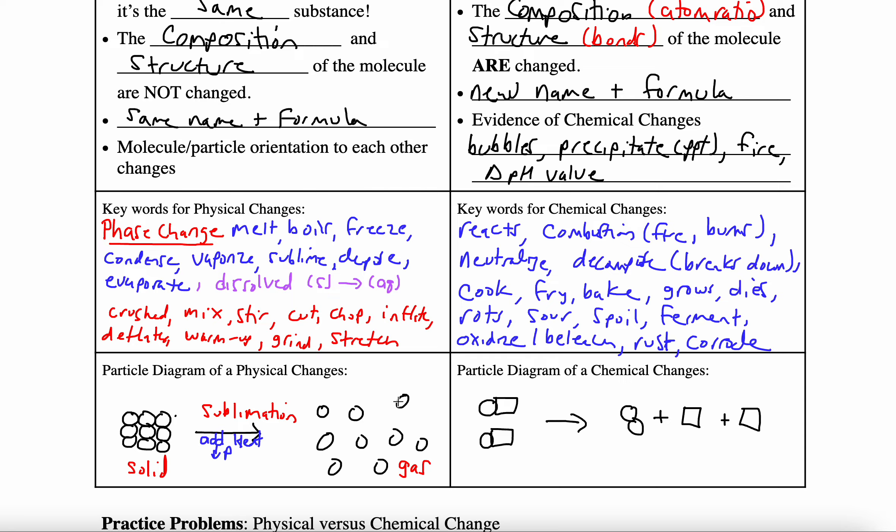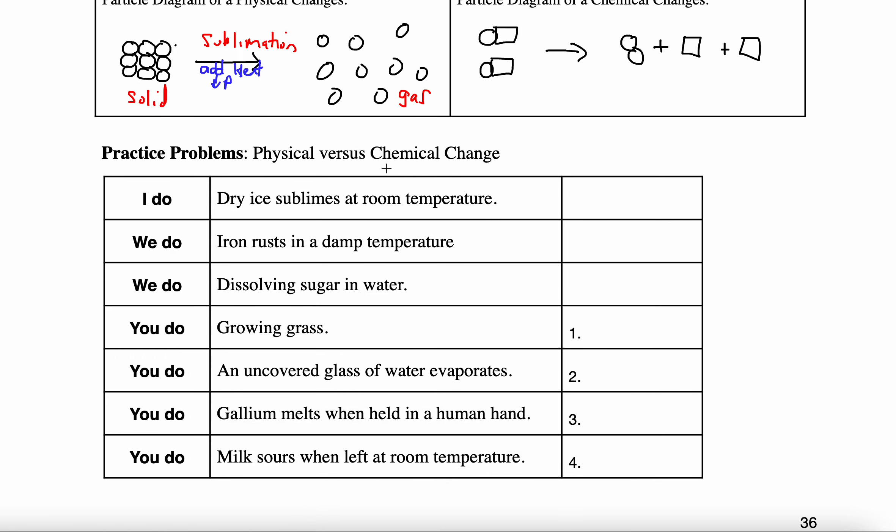Taking a look at the practice problems down below. The 'I do': when I read the first one - dry ice sublimes at room temperature - I really focus on this word 'sublimes'. Either I have now memorized some of these words and what they represent, or I'm looking at my list of words. Sublime is specifically listed as a phase change, and all phase changes are physical changes.